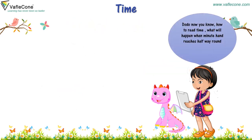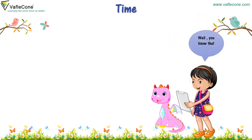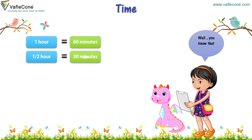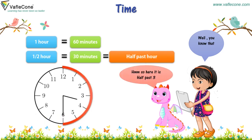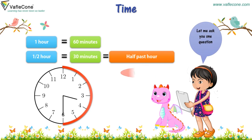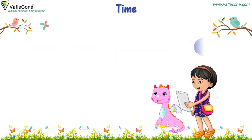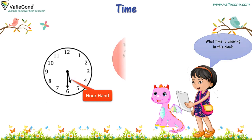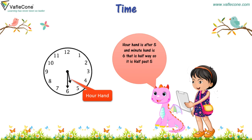Dodo, now you know how to read time. What will happen when the minute hand reaches halfway round? You know that one hour is equal to 60 minutes. Half hour is equal to 30 minutes, which is equal to half past the hour. So here it is half past 3. Let me ask you one question. What is the time showing in this clock? The hour hand is after 5 and the minute hand is at 6, that is halfway. So it is half past 5. Right answer.